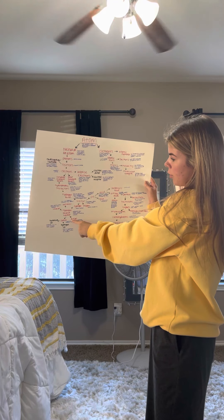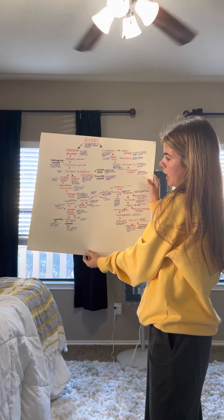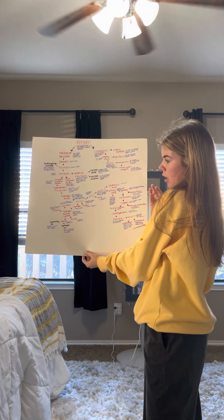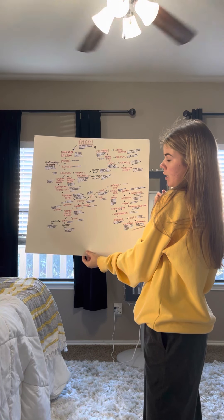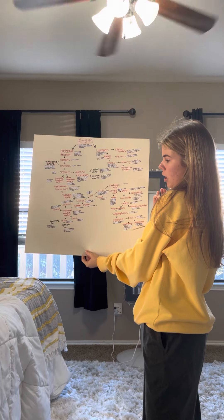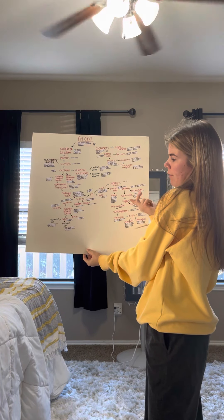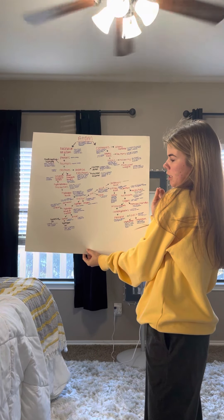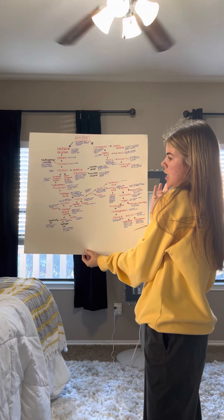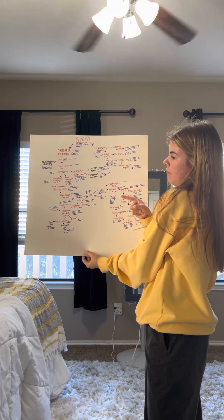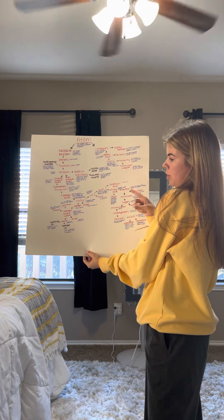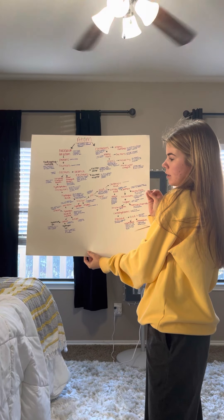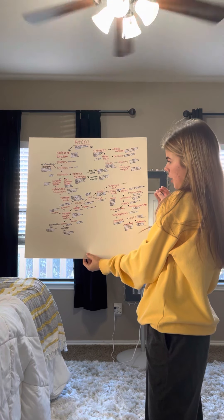Going down, we have anion and cation. Anion is a positively charged ion, and cation is a negatively charged ion. From cation, we have the hydrogen ion — that's when hydrogen gains or loses an electron. And to the left, we have the hydronium ion, which is created when an acid interacts with water.